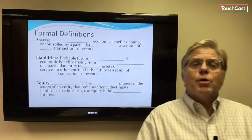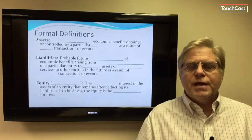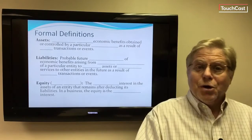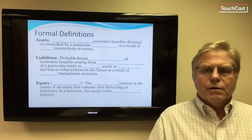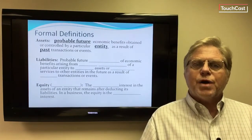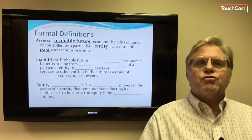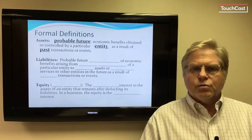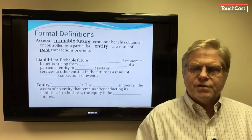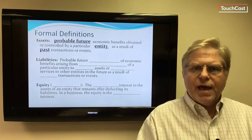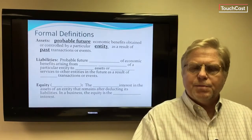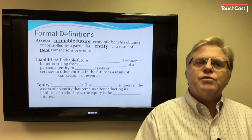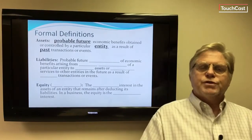Now let's look at some formal definitions. Assets can be basically understood as the resources owned by a business — anything of value the business owns. More technically, assets are defined as probable future economic benefits obtained or controlled by a particular entity as a result of past transactions or events. As we cover various assets, we'll be able to address how cash, prepaid expenses, inventories, and other assets fulfill this definition.